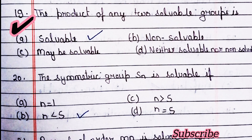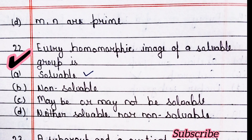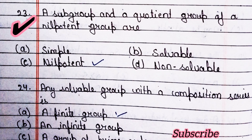Next question: the product of any two soluble groups is soluble. The symmetric group Sn is soluble if — option B is right. Next question: a group of order mn is soluble when n is prime — option C is right. Next question: every homomorphic image of a soluble group is soluble — option A is right.